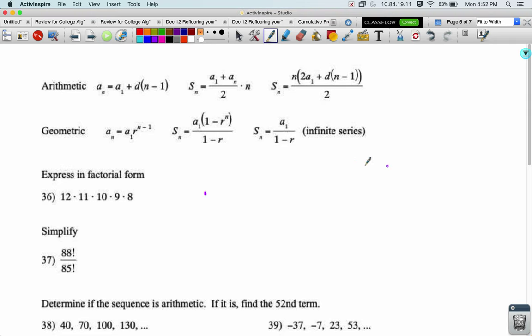In our homework help video, we'll express in factorial form. We want to start with 12 factorial because that will give us 12 times 11 times 10 times 9 times 8 times 7 and so on, and then we want to divide away by the numbers we don't see, so dividing away 7 factorial.